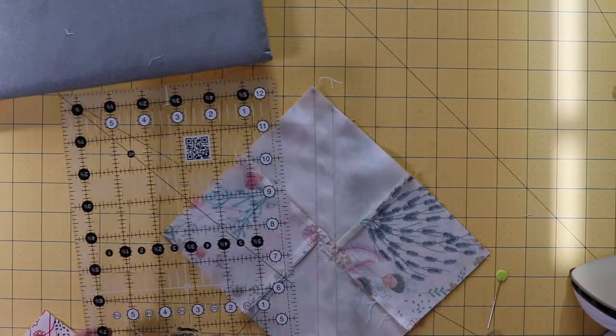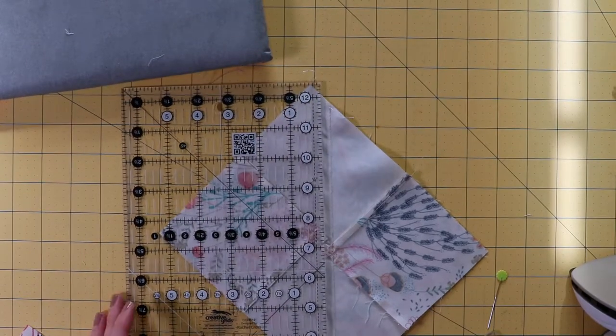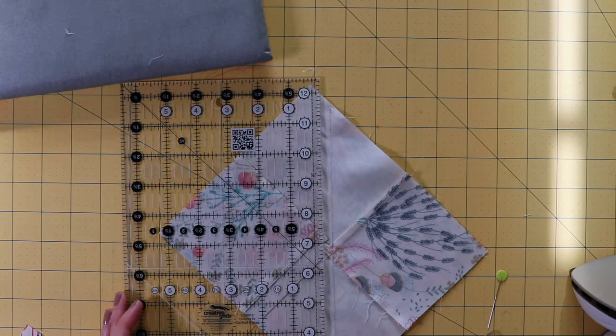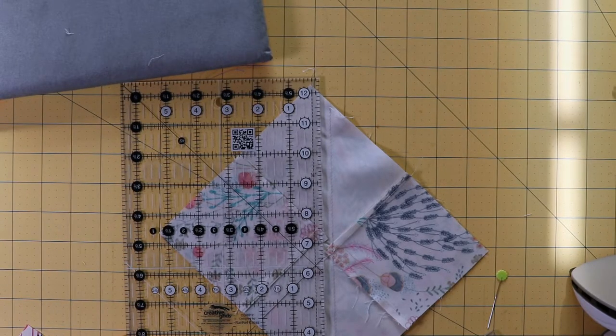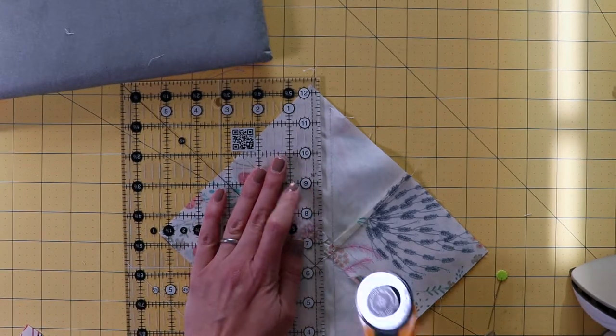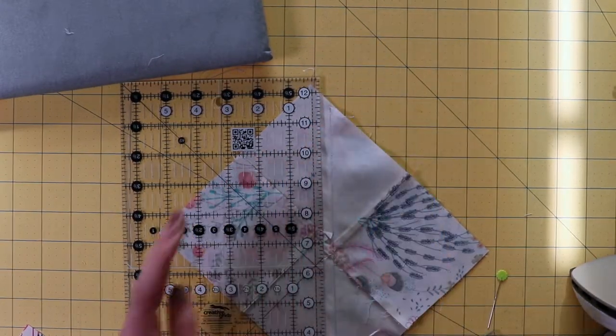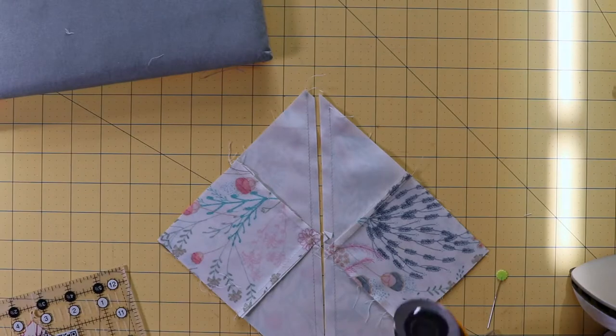I'm probably just going to use my straight edge quilting ruler. Make sure you've got a quarter inch seam allowance. That's the first one.